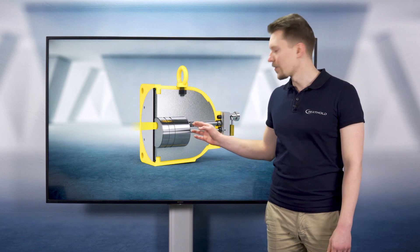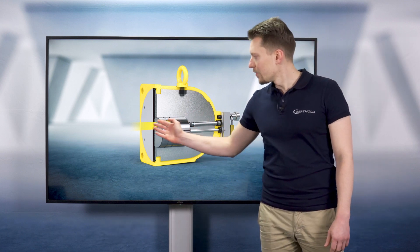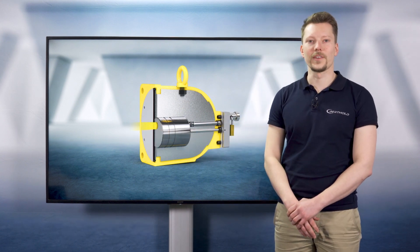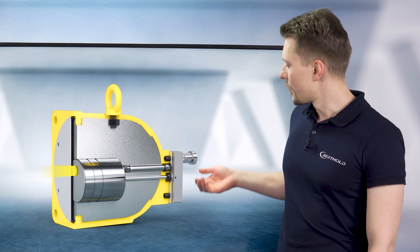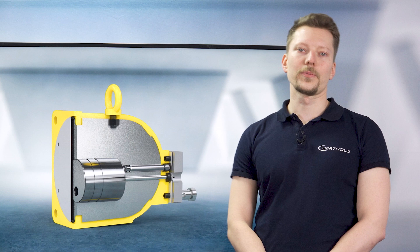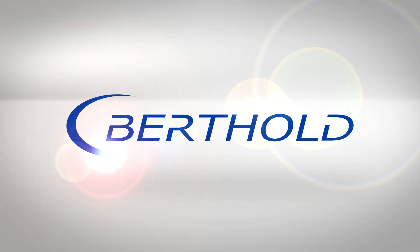The radioactive source is located at the center of the shield. The shutter mechanism allows the useful beam to exit the shield to enable the radiometric measurement task. It can be closed by turning the handle, which makes the shield safe for transport and maintenance.